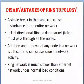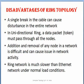Disadvantages of ring topology: a single break in the cable can cause disturbance in the entire network. This topology transmits data in one way, i.e., unidirectional. Addition and removal of any node in the existing network is difficult and causes issues in network activity. A ring network is much slower than an Ethernet network.